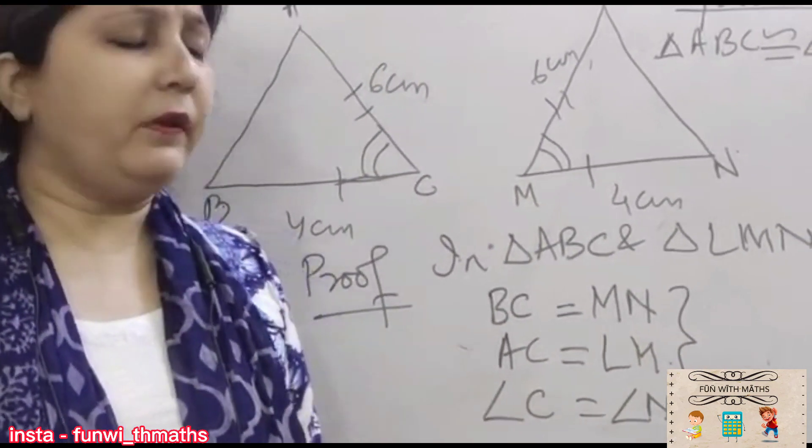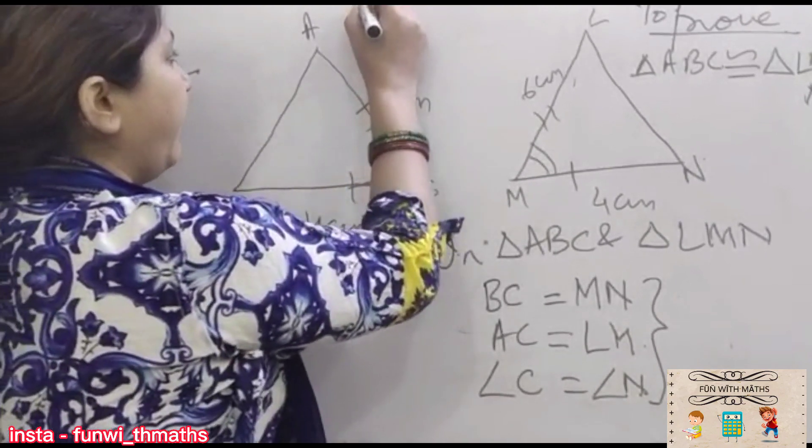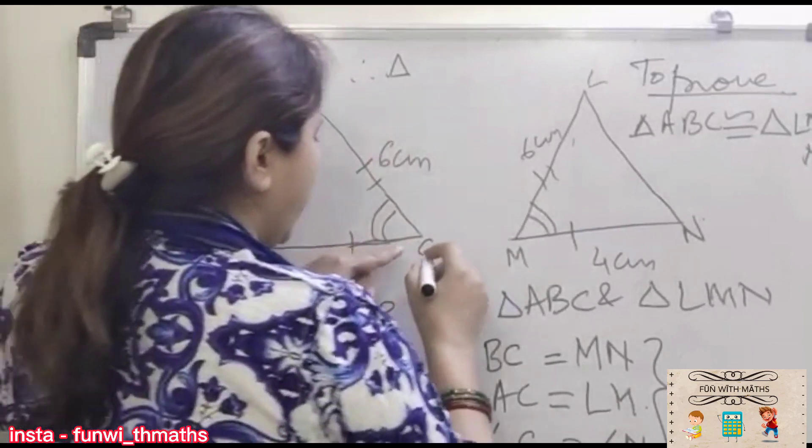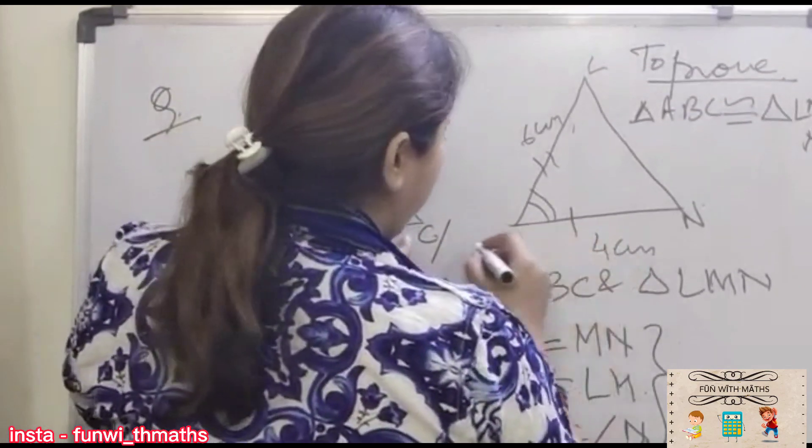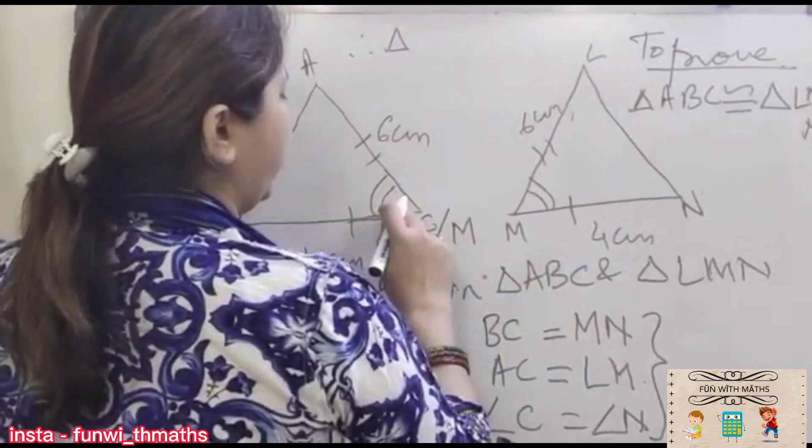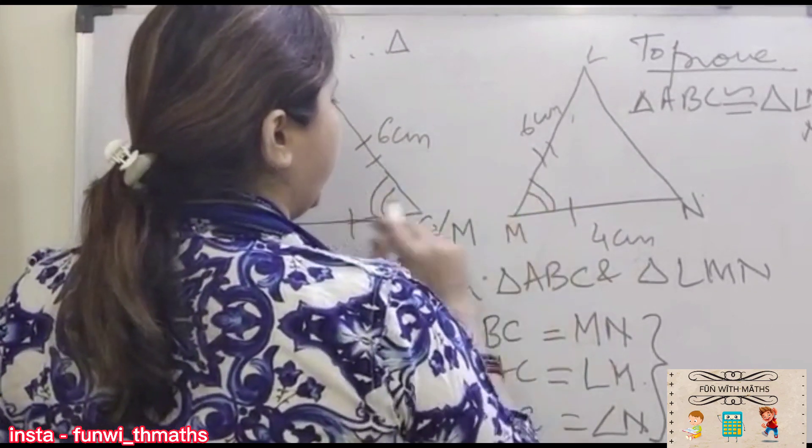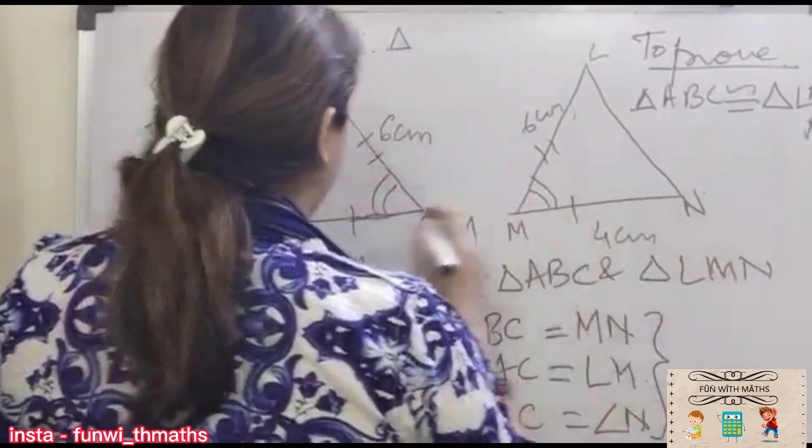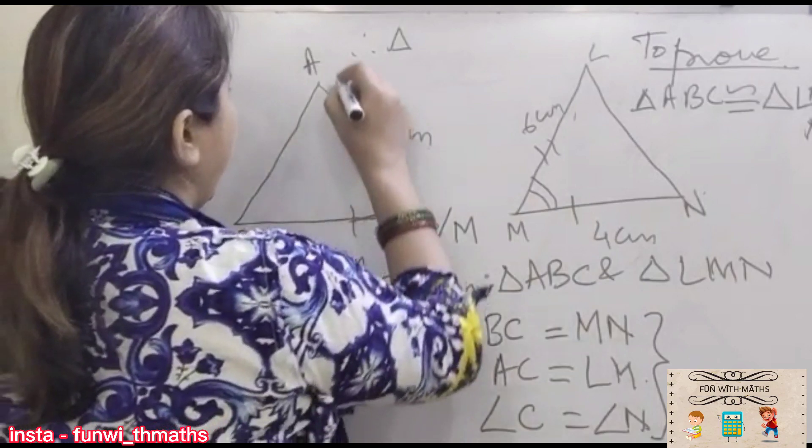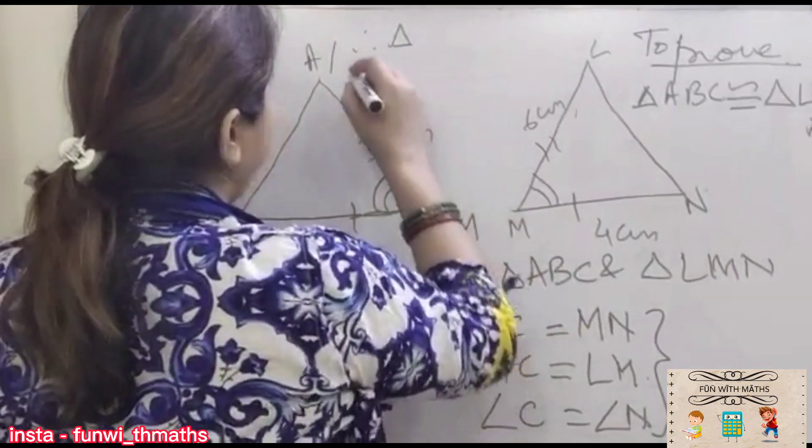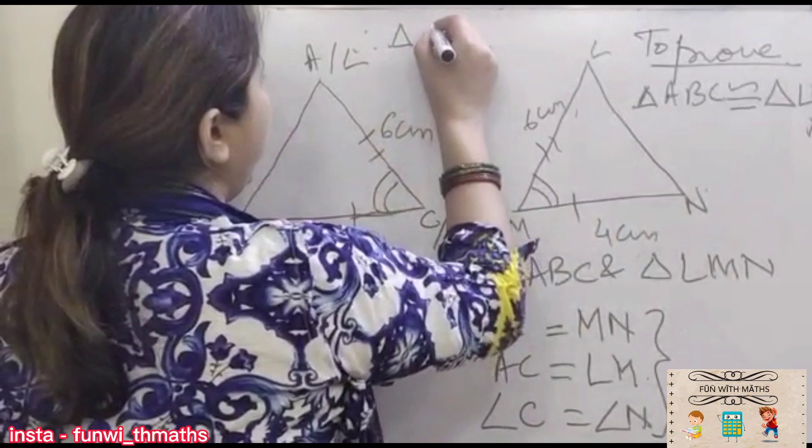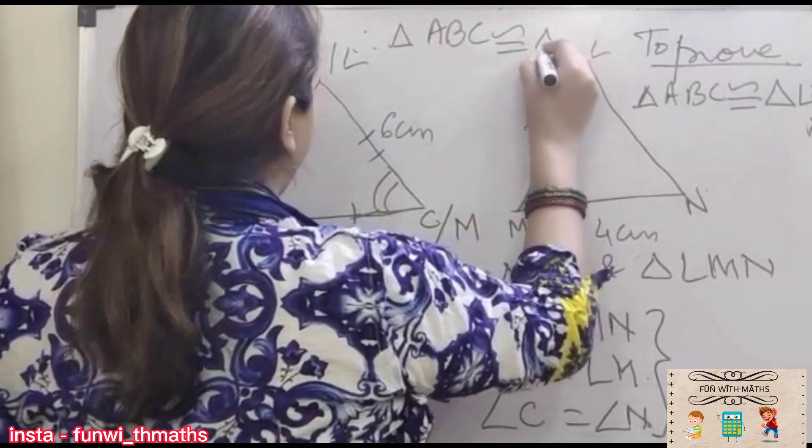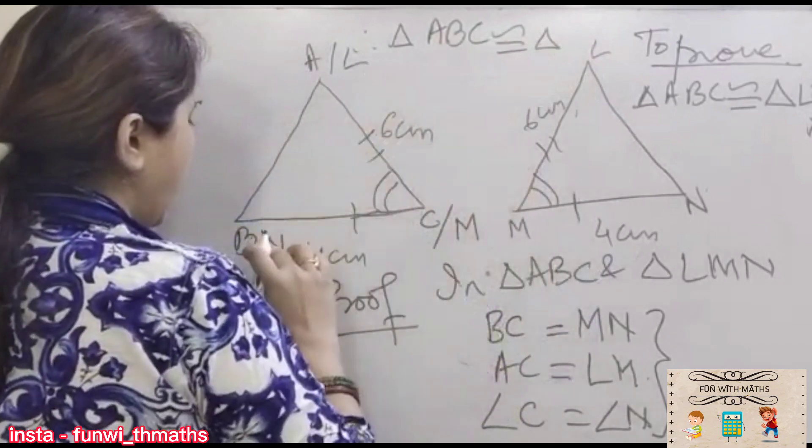So triangle, this is now final statement where correspondence must be established. C per you will get M, this is N and A per L. That means triangle ABC congruent to triangle LNM by SAS rule.